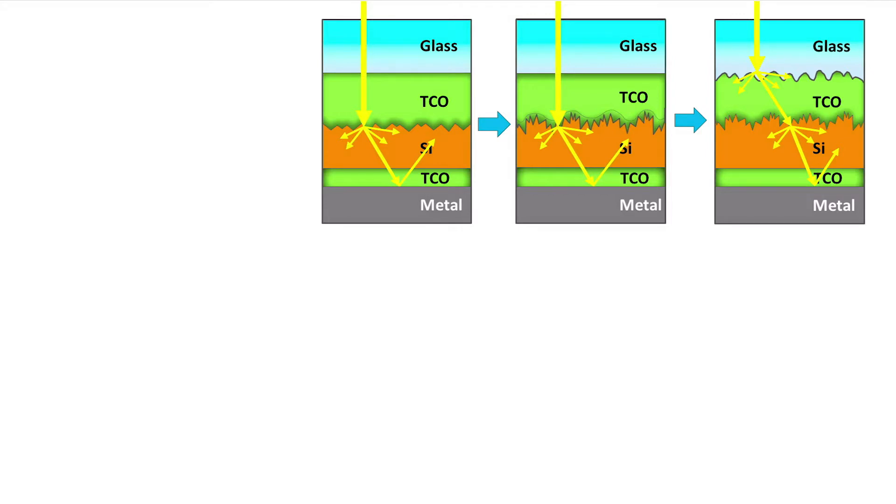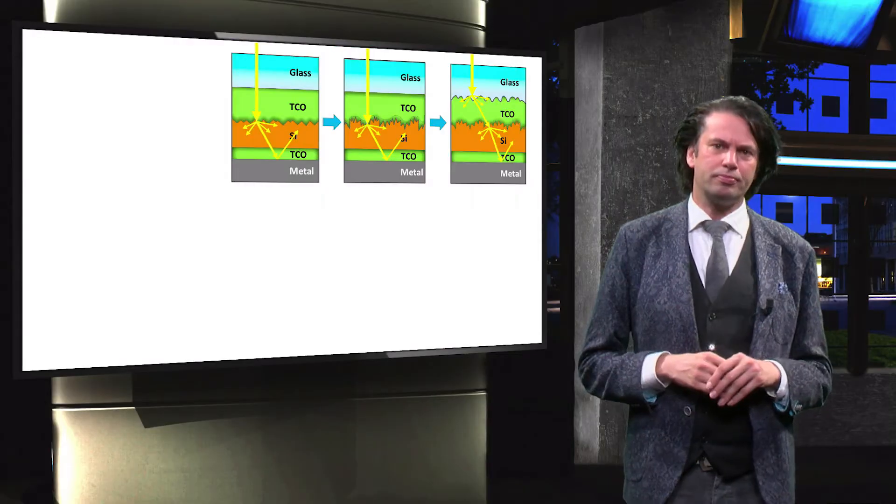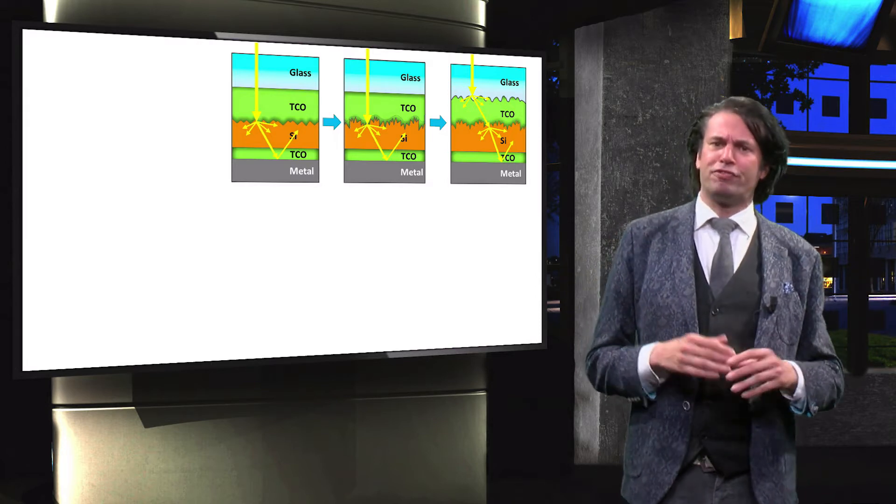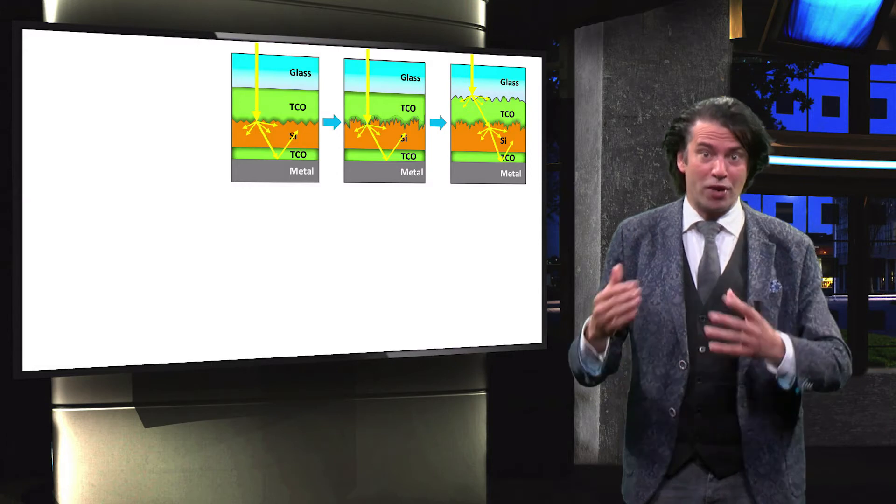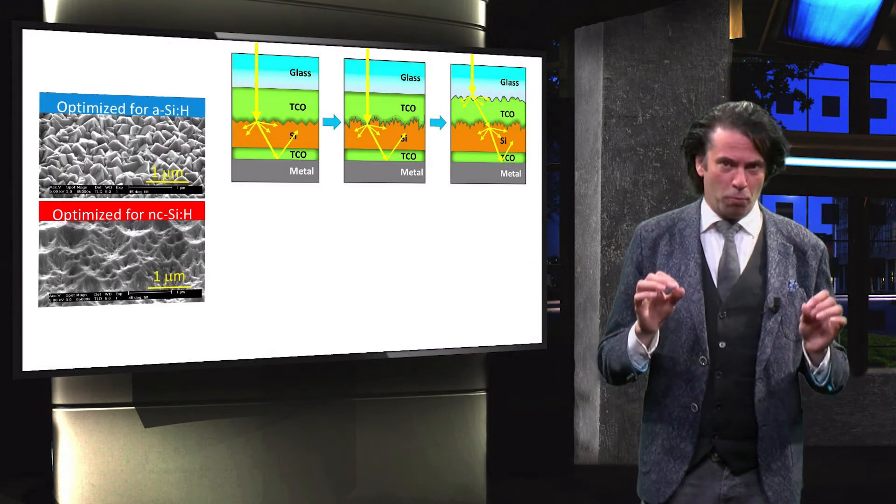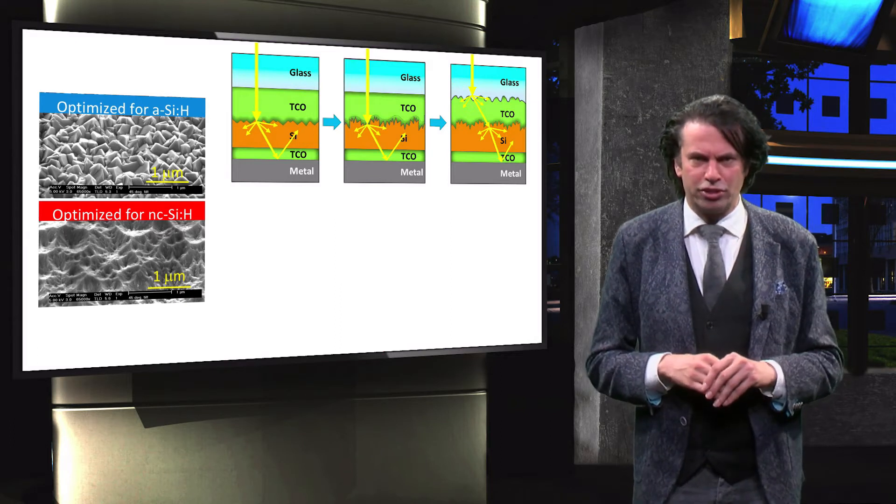To summarize, we have discussed that to facilitate external light trapping for the various spectral ranges, the size of the textured surface features should be scaled accordingly. The visible spectral range requires a smaller scale of texturing than the spectral range from the red to infrared, as demonstrated by the optimal textures for amorphous silicon solar cells and nano-crystalline silicon solar cells.